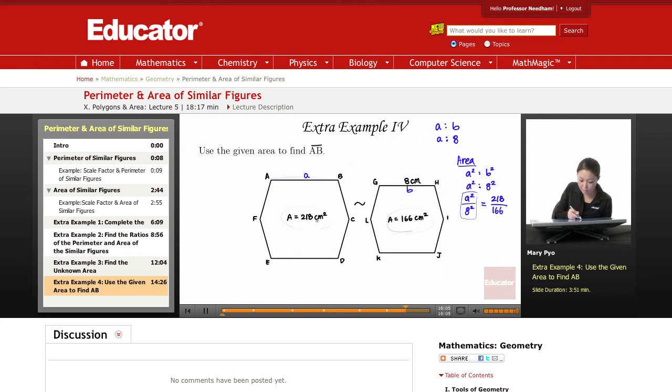So the ratio of this area to the area is A squared to 64. And you're just going to use this proportion to solve. It's going to be 166, and I'm just cross-multiplying. A squared equals 218 times 8 squared is 64.